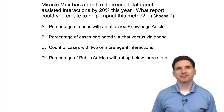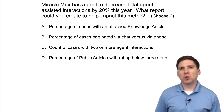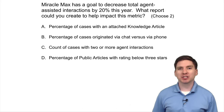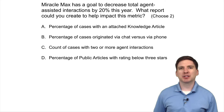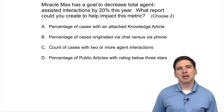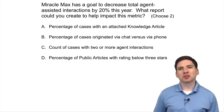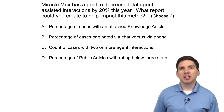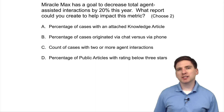Question one. Miracle Max has a goal to decrease total agent-assisted interactions by 20% this year. What report could you create to help impact this metric? A, percentage of cases with an attached knowledge article. B, percentage of cases originated via chat vs. via phone. C, count of cases with two or more agent interactions. Or D, percentage of public articles with a rating below three stars?